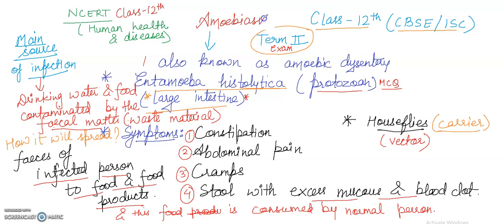Amoebiasis is commonly called amoebic dysentery. In this video I will cover what exactly this disease is, how it spreads from one person to another, the main source of infection, where the causative agent is found, its name, and the symptoms.